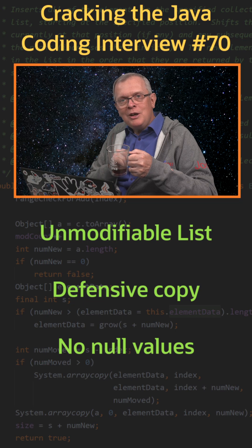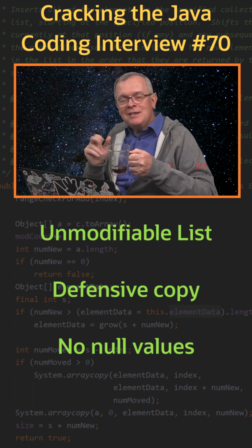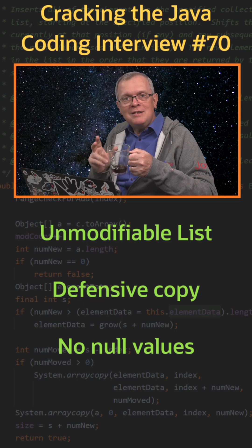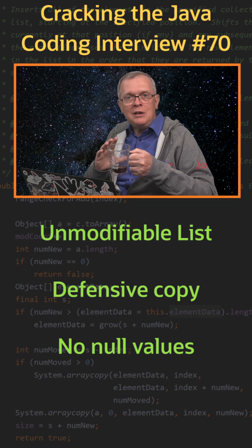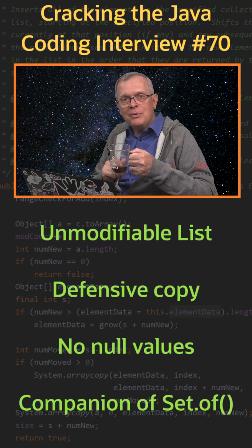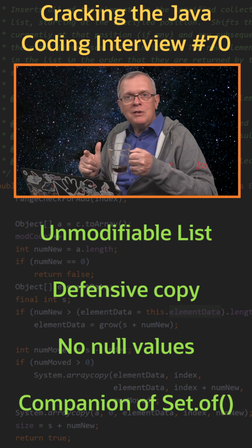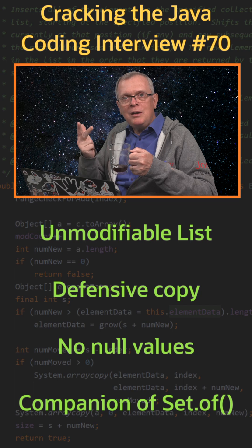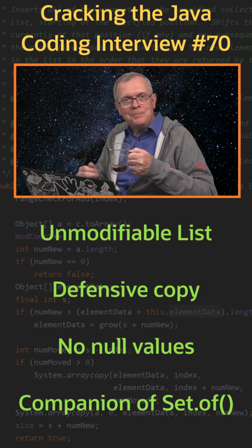One last word: you can also create sets with Set.of(), which works in the same way as List.of() — unmodifiable, defensive copy, and null values not allowed.